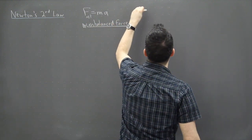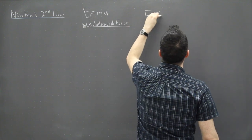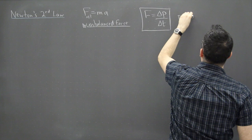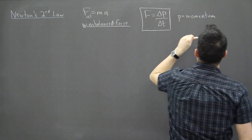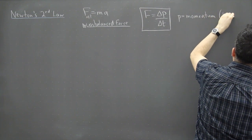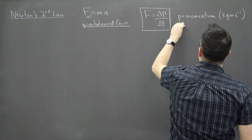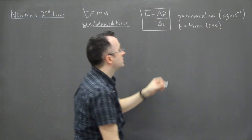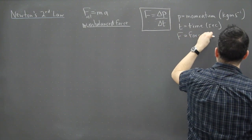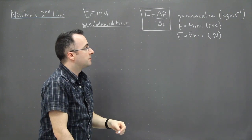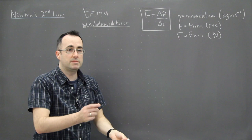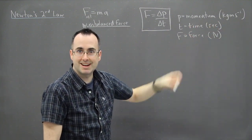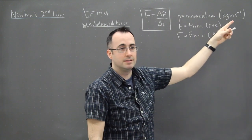A better way to write Newton's second law is actually F equals delta P over delta T. I think this is the better way to write it. P here is momentum, and that's measured in kilograms meters per second. T is, of course, time, measured in seconds, and force is measured in newtons as usual. The momentum is something we'll talk about in a coming video - it's just M times V, the mass times the speed. That's how I knew the units were going to be kilograms meters per second.